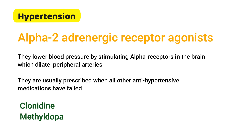Central alpha-2 adrenergic receptor agonists lower blood pressure by stimulating alpha receptors in the brain, which dilate peripheral arteries. They are usually prescribed when all other antihypertensive medications have failed. These include clonidine and methyldopa.